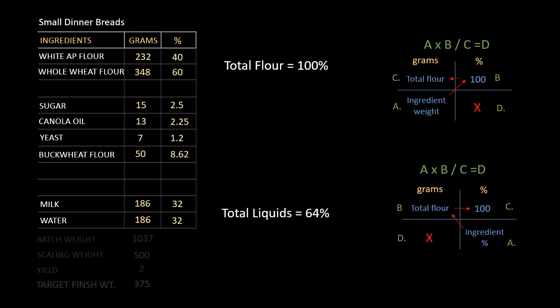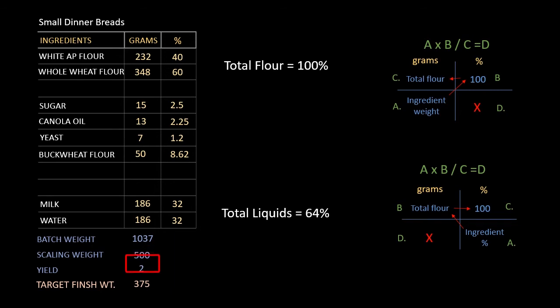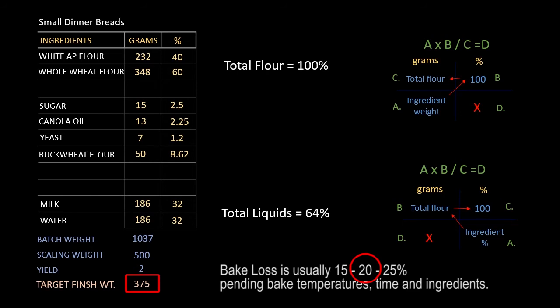The nice thing about laying it out like this is that you can quickly and easily calculate your batch weight. You know exactly what your batch is going to weigh. You've got your scaling weight in there, and you can divide your scaling weight into your batch weight to get your yield. By subtracting approximately 120 grams from your scaling weight, you can pretty much determine what your target finished weight is going to be.